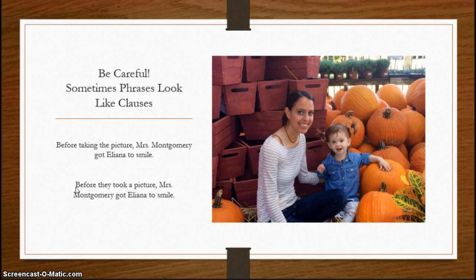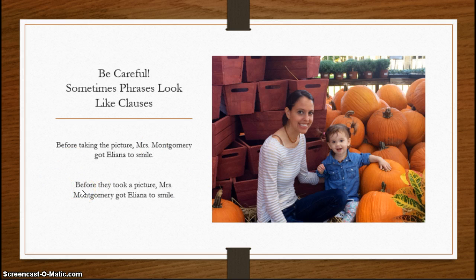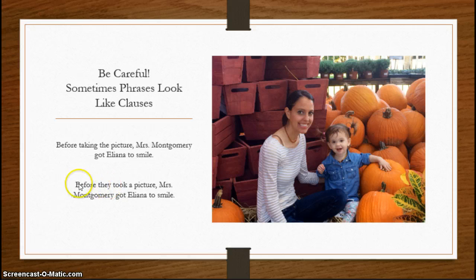Now look at this: I start with 'before' again, but my sentence is very different. 'Before they took a picture, Mrs. Montgomery got Eliana to smile.' My independent clause hasn't changed — Mrs. Montgomery is my subject, 'got Eliana to smile' is my predicate. But up here, 'before' is acting as what we call a subordinating conjunction — the part that makes this dependent. Because if you look, 'they took a picture' — I have a noun, 'they,' and a verb, 'took.' So this is a clause. The 'before' makes it a dependent clause, but it's still a clause because it has both a noun and a verb.